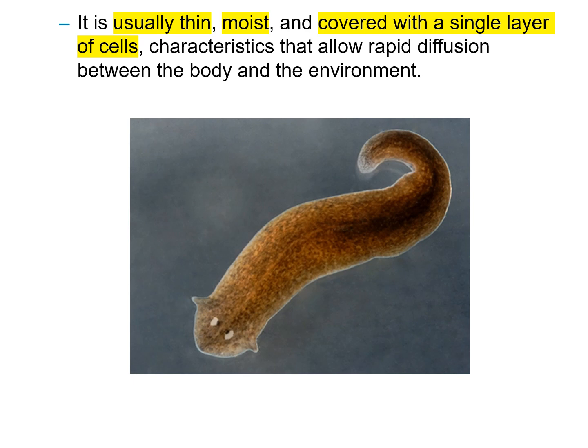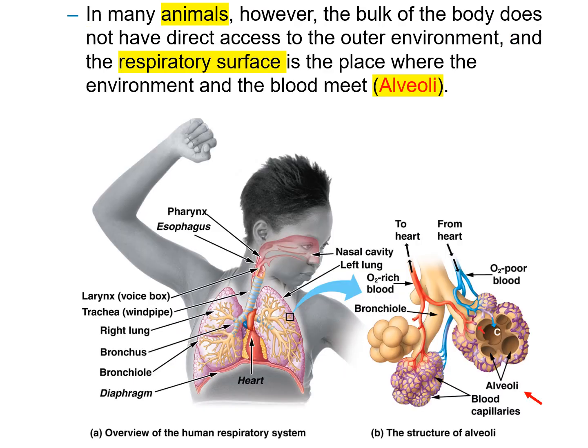In the picture, we're looking at Dugesia — a planaria, a flatworm that is really, really small and thin. Every cell in its body is able to diffuse gas in and out because it is super thin, moist, and has a single layer of cells.